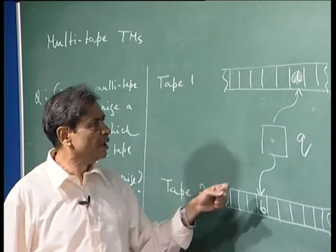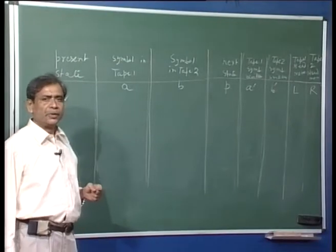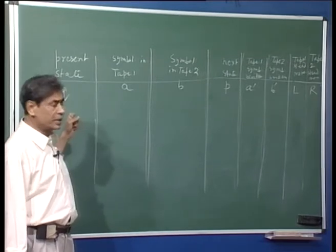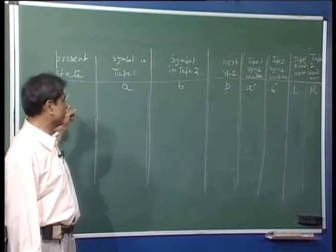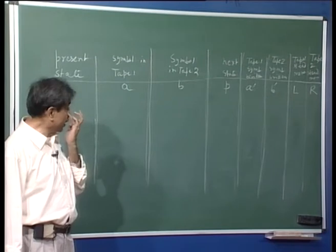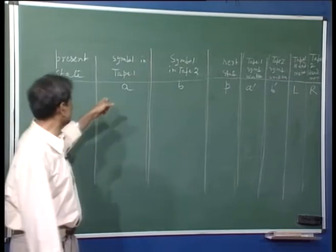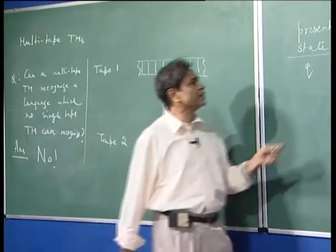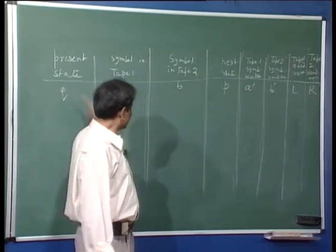A move of such a two-tape machine is described not by a quintuple of 5 elements, but by a tuple of 8 elements. This is because you need to describe, given a present state and the two symbols on the two tapes: in this example, the present state of the Turing machine is Q, the symbol on tape 1 is A, and the symbol on tape 2 is B.